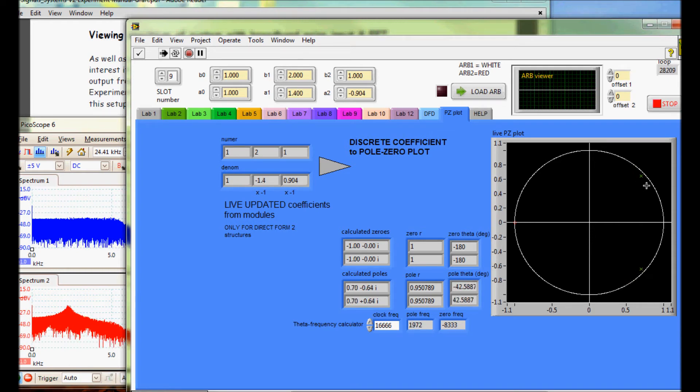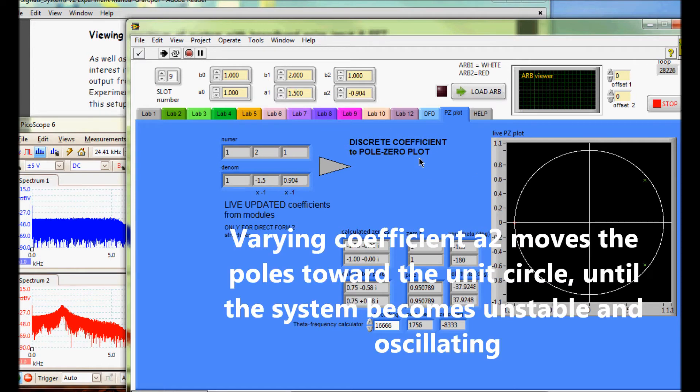Varying coefficient A2 moves the poles closer or further away from the unit circle and allows the system to become unstable, which is very interesting.